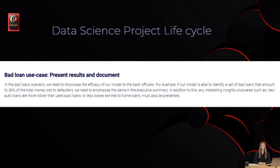Bad loan use case — Present Results and Document. In the bad loans scenario, we need to showcase the efficacy of our model to the bank officials. For example, if our model is able to identify a set of bad loans that amount to 36% of the total money lost to defaulters, we need to emphasize that in the executive summary. In addition, any interesting insights uncovered — such as new auto loans being riskier than used auto loans, or fewer losses being tied to home loans — must also be presented.